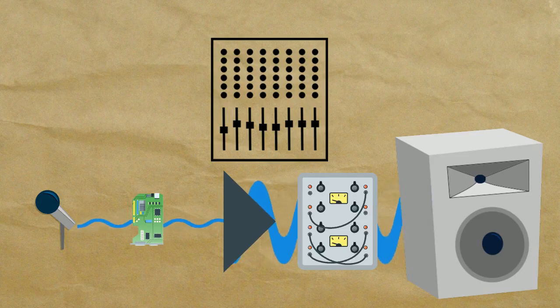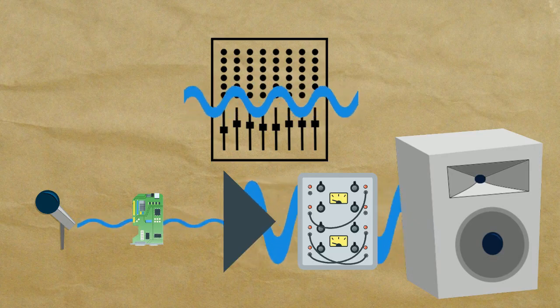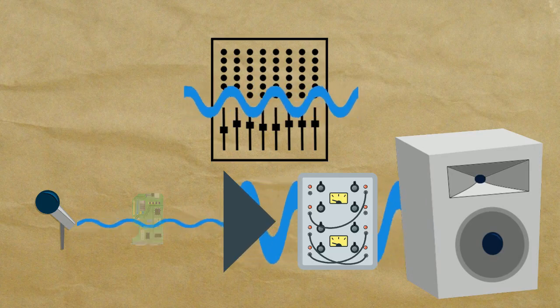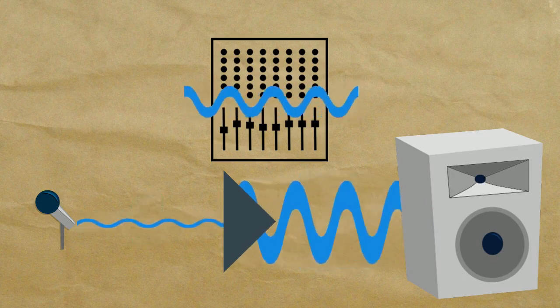To work around this, there is an intermediate signal level called line level. It is an industry standard level of +4 dBu that almost all pieces of audio equipment operate at and does not need the high sensitivity or high current capacity required to process microphone and speaker level signals.